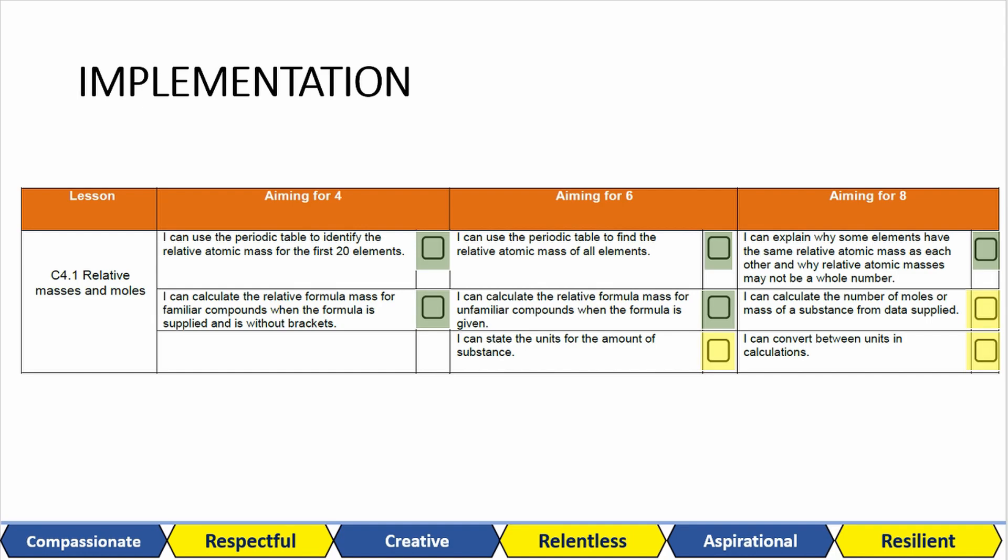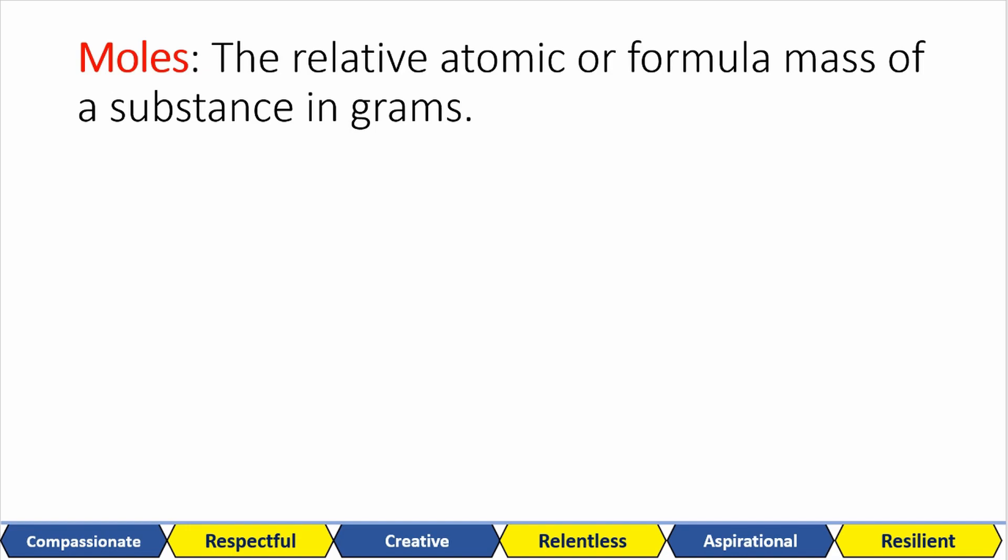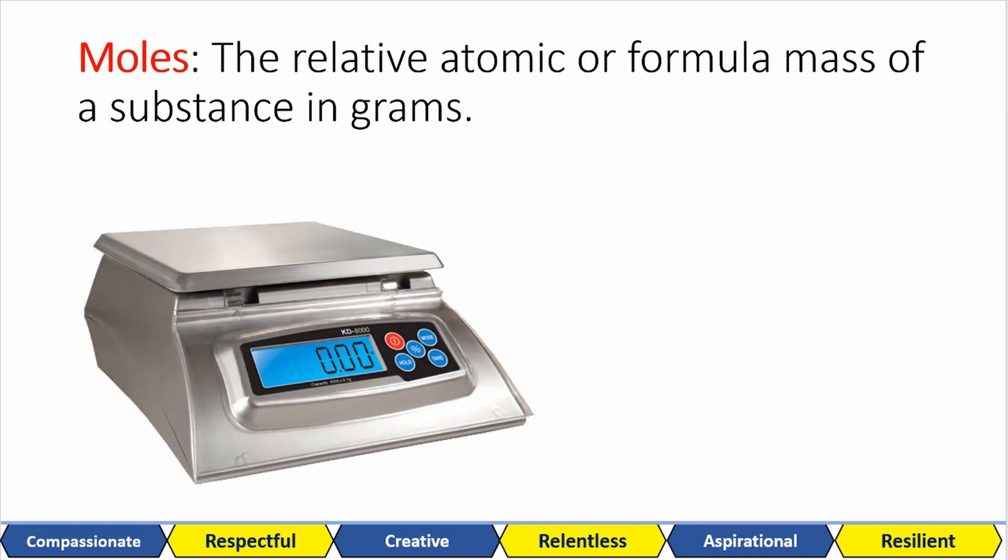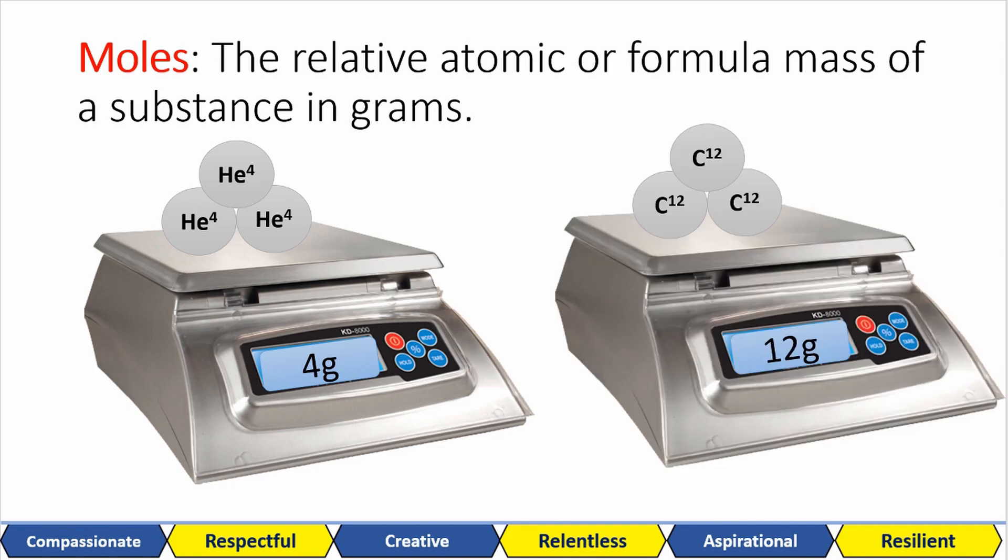For your GCSE chemistry, you need to be able to state that moles is equal to the relative atomic mass or the relative formula mass of a substance in grams. In simple English, that just means that if you weigh out one mole of a substance, the mass on your top pan balance is equal to the RAM or RFM in grams. So one mole of helium will have a mass of four grams and one mole of carbon will have a mass of 12 grams.